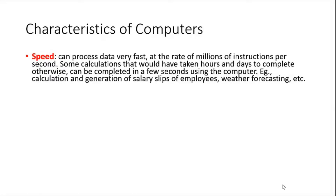The computer is very fast — it processes data very fast. When you are calculating using pen and paper or even a calculator, it takes time, but a computer does millions of instructions per second. Some calculations that would take hours or even days can be completed by a computer in just a few seconds.